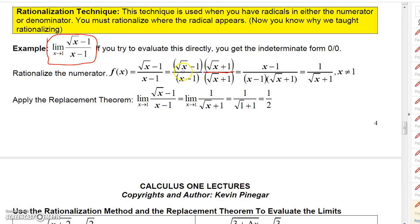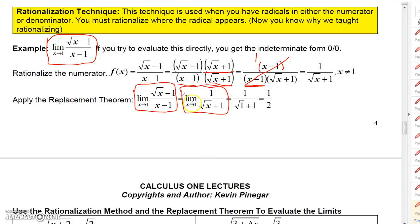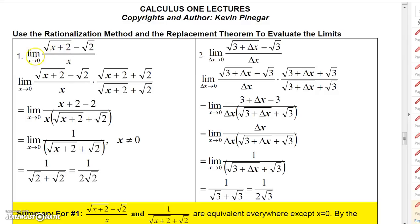To rationalize √x−1, multiply numerator and denominator by (√x+1). The numerator becomes (√x)²−1² = x−1 by difference of squares. On the bottom, keep the factors as (x−1)(√x+1). Then (x−1)/(x−1) = 1, leaving 1/(√x+1) as the replacement function. Evaluating at x = 1: 1/(√1+1) = 1/2.